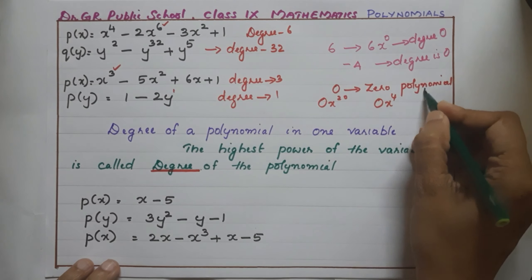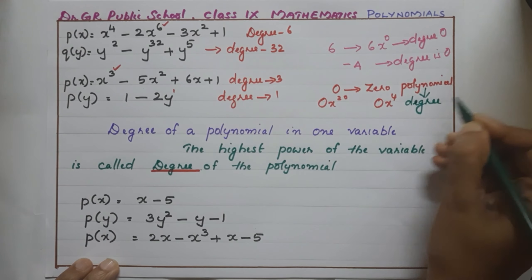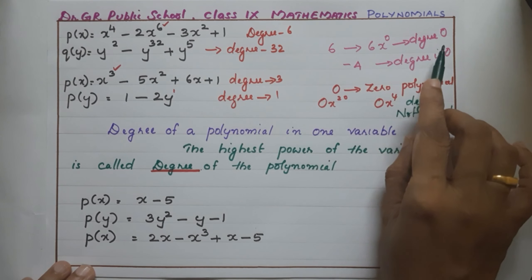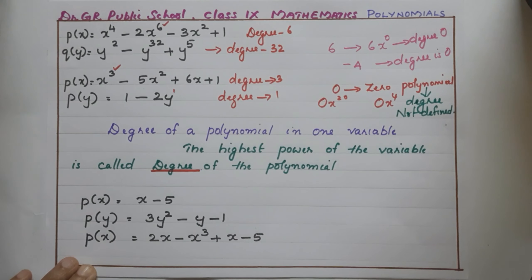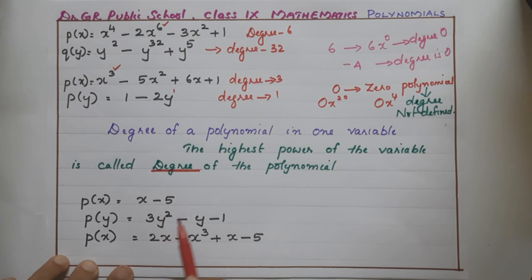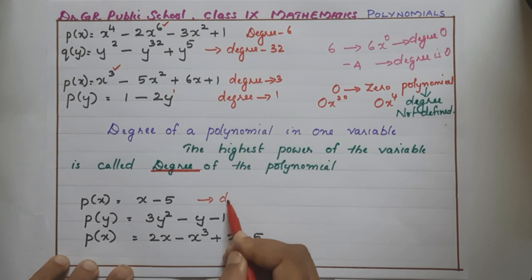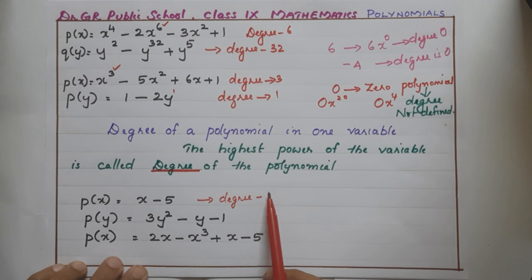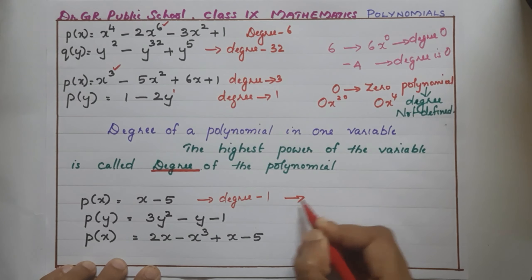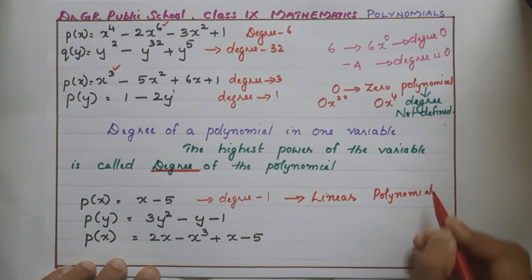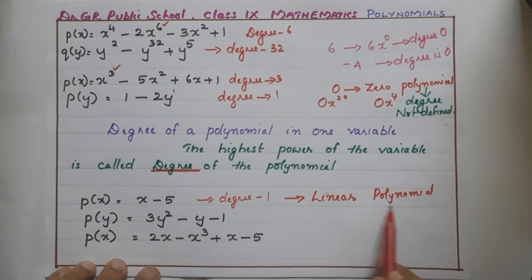So: degree of a constant polynomial is 0, and degree of a zero polynomial is not defined. Now consider the polynomial P(x) = x - 5. The degree is 1. If the degree of a polynomial is 1, that polynomial is called a linear polynomial. So what is a linear polynomial? If the degree of a polynomial is 1, it is called a linear polynomial.